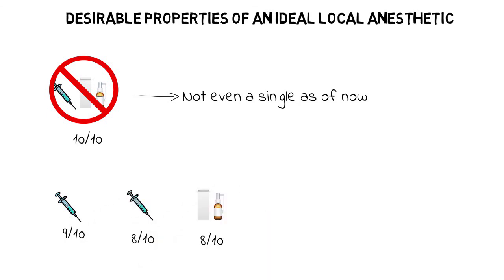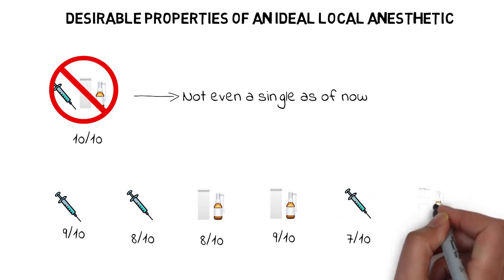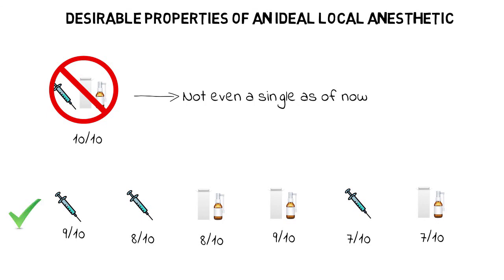But the research is still underway on making an ideal perfect local anesthetic solution. Maybe in the future, we might even have one anesthetic carrying all of the desirable properties discussed above. So this was just a brief video on desirable properties of an ideal local anesthetic. I hope you like this video. Please stay safe, take care, and goodbye.